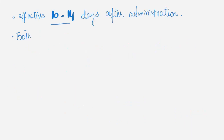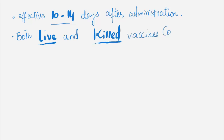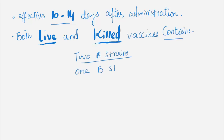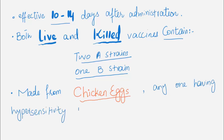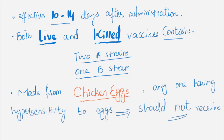Both live and killed vaccines contain two A strains and one B strain of influenza viruses. Both vaccines are made from chicken eggs, and anyone having a hypersensitivity reaction to eggs should not receive the vaccine.